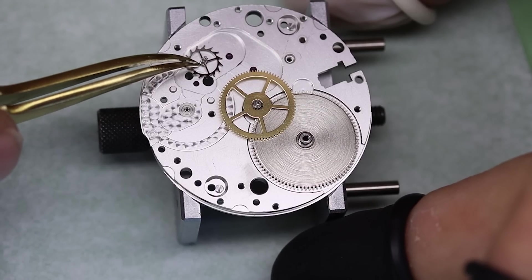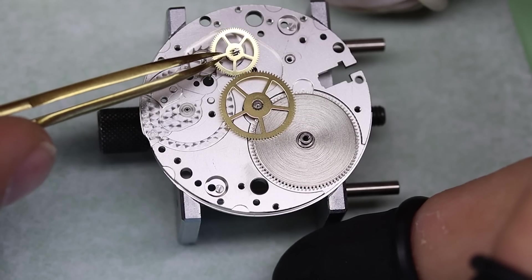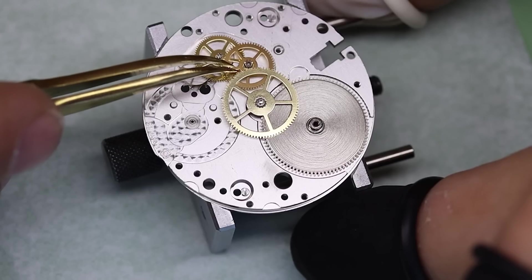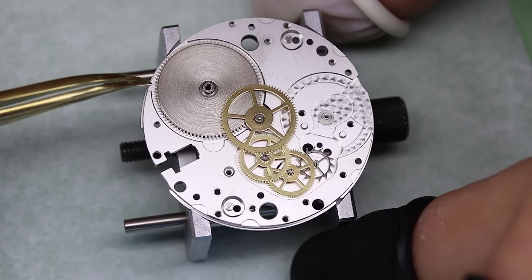Note that all the other wheels also have pinions on them. And the second wheel drives the third wheel pinion, third wheel drives the fourth wheel pinion, and so forth. And with the whole train in place, we should be able to run it by rotating the barrel a little bit. But no.